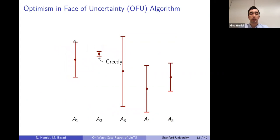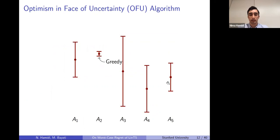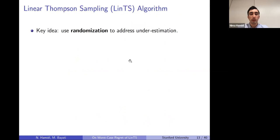Back to the figure: for each action the width of the confidence interval is twice that quantity. OFUL chooses the action with the highest upper confidence bound — in this example, that is the action whose upper confidence bound is above all others.